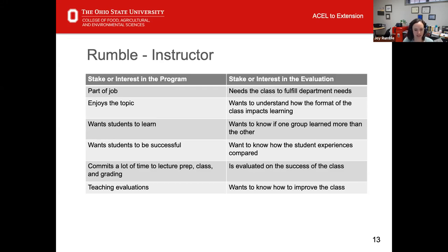For my intro to AgriCom class, I utilized myself as the instructor as the example. Looking at the stake or interest in the program: it's part of my job, I enjoy the topic, I really want my students to learn and be successful, I put a lot of time into this, and teaching evaluations also impact how I'm evaluated in my professional role. Looking at the stake or interest in the evaluation: this class fulfills department needs, I want to understand how the format of the class impacts learning between the two campuses, I want to know if one group learned more than another, I want to know how students' experiences compared across the two campuses, I'm evaluated on the success of the class, and I want to know how to improve the class.